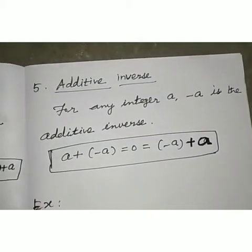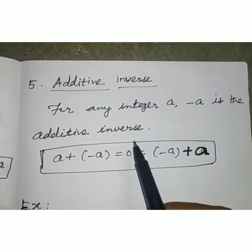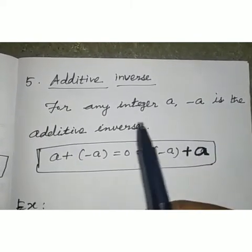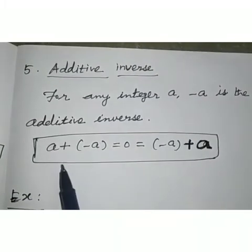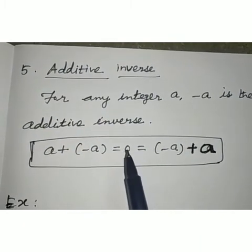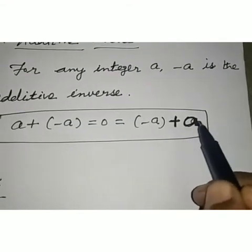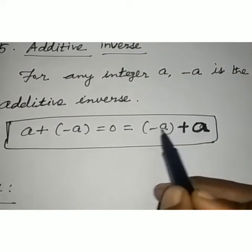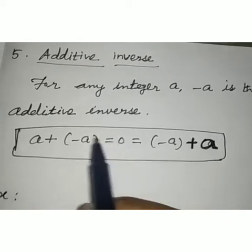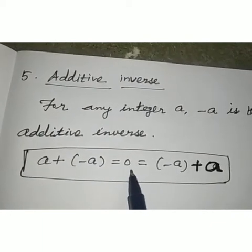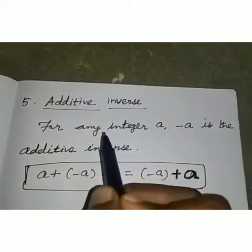The last property is additive inverse. For any integer a, minus a is the additive inverse. So a plus (minus a) equals 0, or minus a plus a equals 0. The opposite of a is minus a, the negative number, and when we add them we get 0. This property is known as additive inverse.